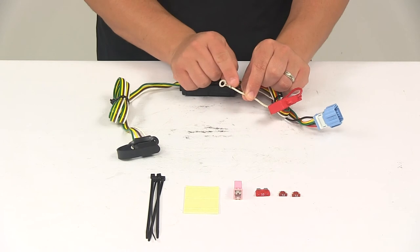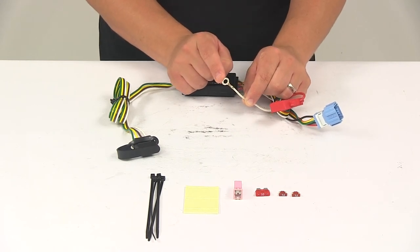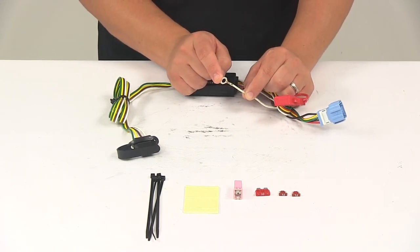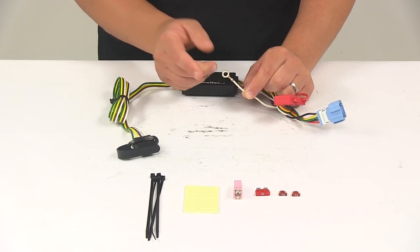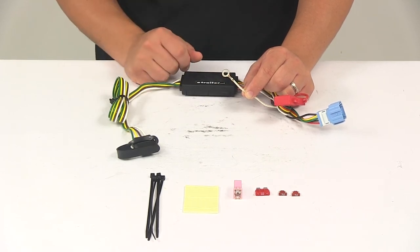And then you'll need to make a ground connection. Your ground wire is your white wire with a ring terminal attached to it. You can make the ground connection to an existing screw with nut in the vehicle frame, or you could use a self-tapping screw to make the ground connection as well.